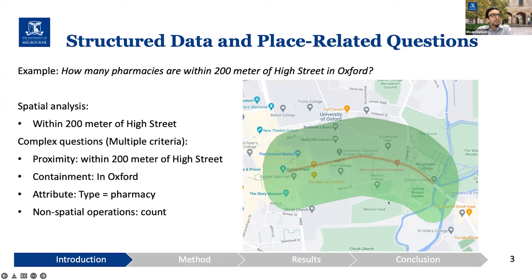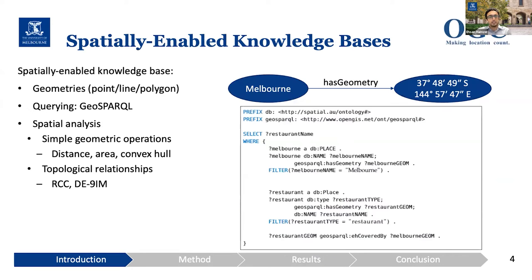Often in place-related questions, we have to perform spatial analyses, and we have context or multiple criteria such as proximity, containment, and non-spatial operations. That's why structured data are quite useful for place-related question answering.